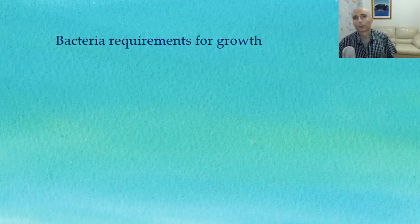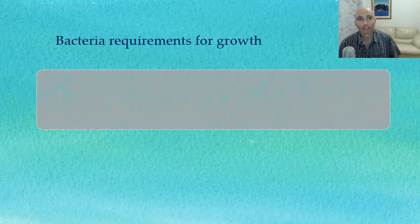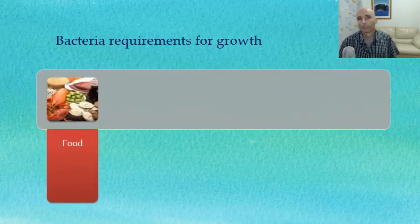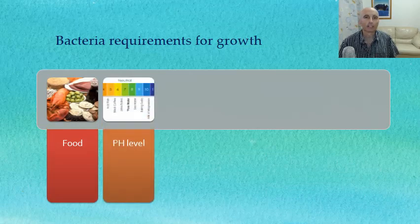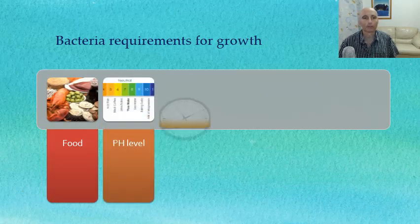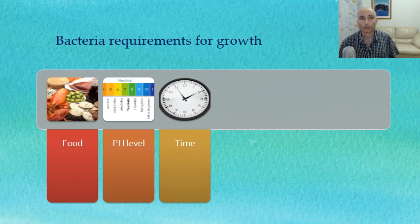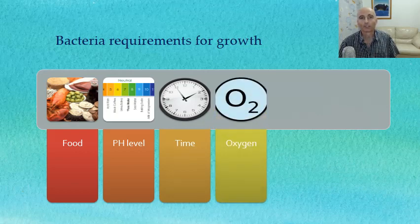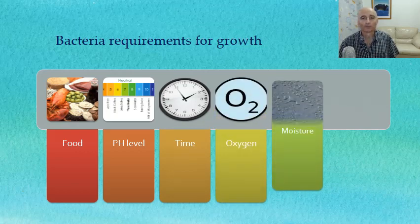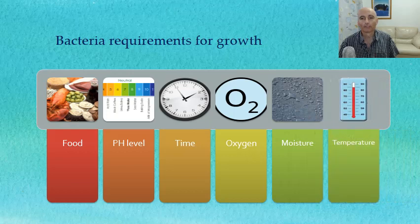Before we get into the main show, let's look at the requirements for bacterial growth. First of all, they need food, then they need a suitable pH level, then time to grow, oxygen, moisture, and temperature. We're going to have a look at all of those.